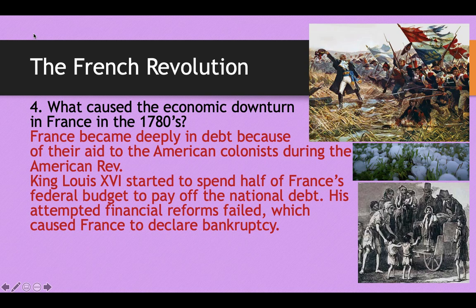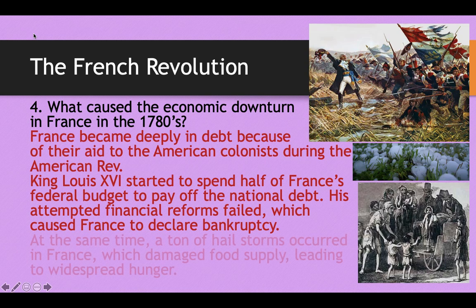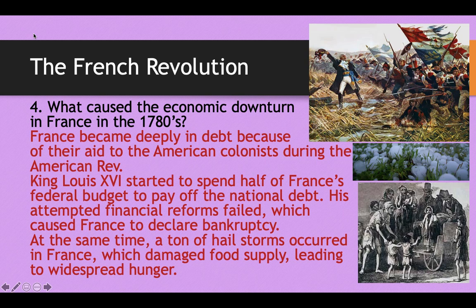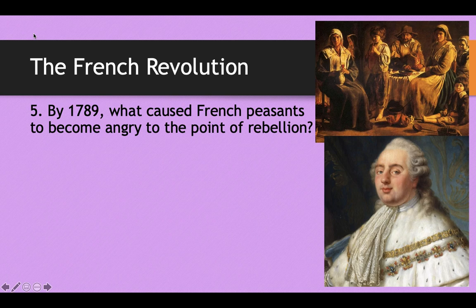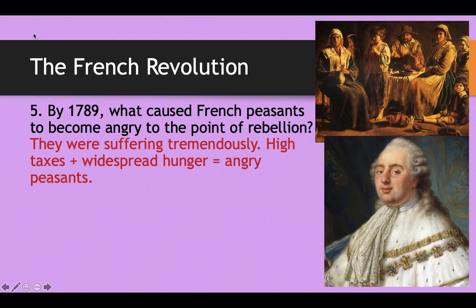King Louis XVI started to spend half of France's federal budget to pay off the national debt. His attempted financial reforms just did not work, and this caused France to have to declare bankruptcy by the end of the 1780s. At the same time, there were a ton of hailstorms that pelted France, damaged the food supply, and led to widespread hunger. So by 1789, the French peasants were to the point of rebellion.